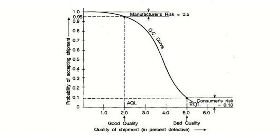The OC curve is drawn between the probability of accepting a shipment and the percent defective. This involves type 1 error, which is the producer or manufacturer error noted by alpha 0.05. The type 1 error or manufacturer risk is rejecting a good product or good lot, because in sampling there can be chances that a good lot gets rejected. If a bad lot gets accepted and reaches the consumer, that is the consumer risk, noted by beta.